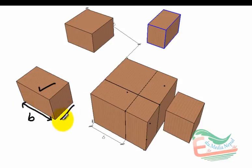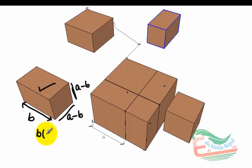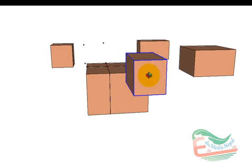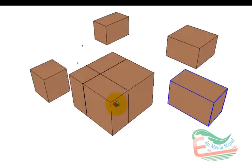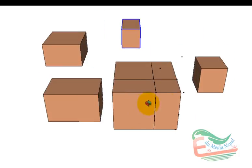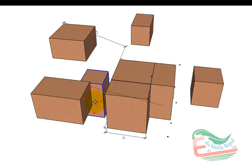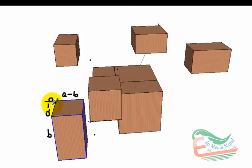Volume of this block is: this distance b, times this distance a minus b, times this length a minus b. So its volume is b times a minus b whole square — length times breadth times height. Similarly, volume of this block is also b times a minus b whole square. So we got two blocks of the same size: b times a minus b whole square. And there is one more block in the bottom part, whose volume is also b times a minus b whole square. So altogether, we got three blocks having volume b times a minus b whole square.